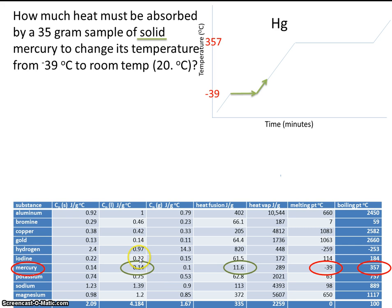So let's start at the plateau. Q equals MHF. They give us the mass, it's 35 grams, and the heat of fusion is in our chart. It's 11.6 joules per gram.